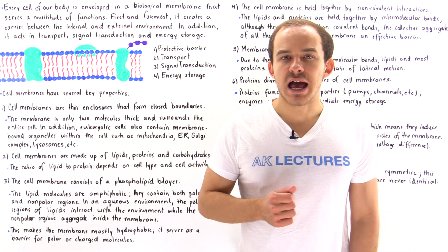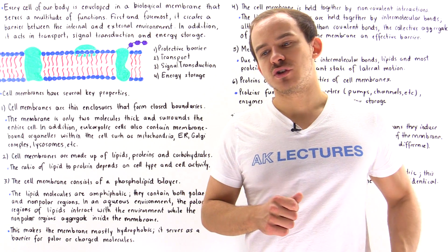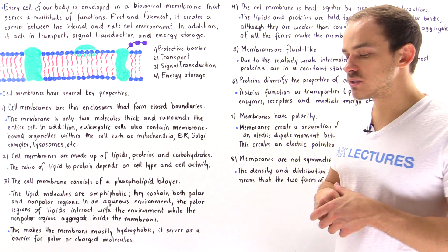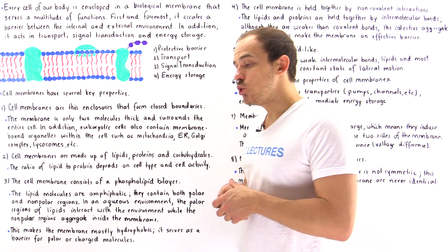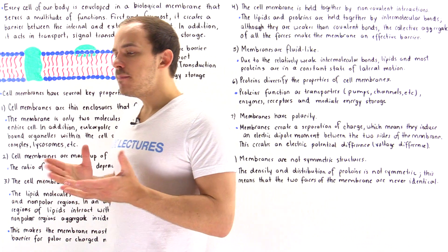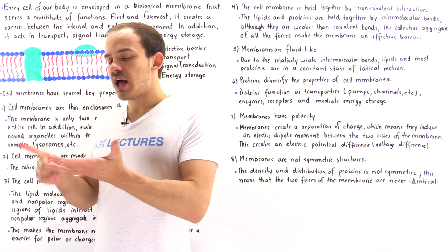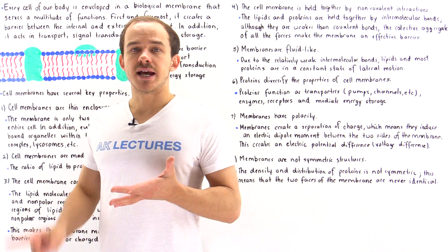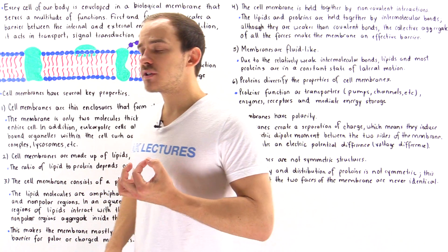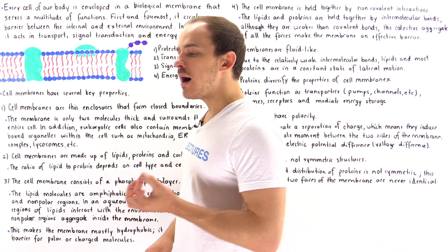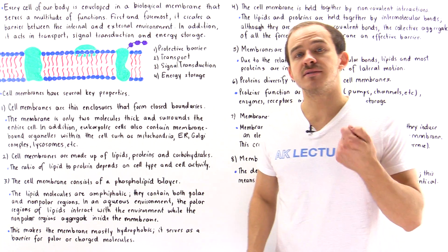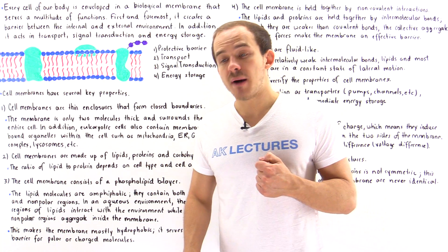The fourth and final class of biological molecules we're going to focus on are lipids, also known as fats. Lipids, just like proteins, nucleic acids, and carbohydrates, are very important biological molecules that play many different roles inside our cells and inside our body.